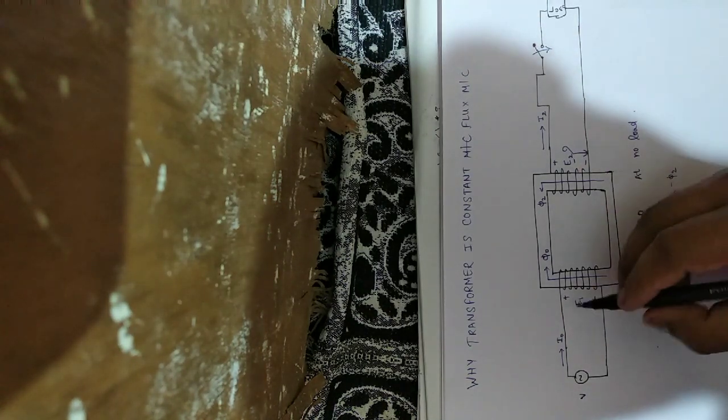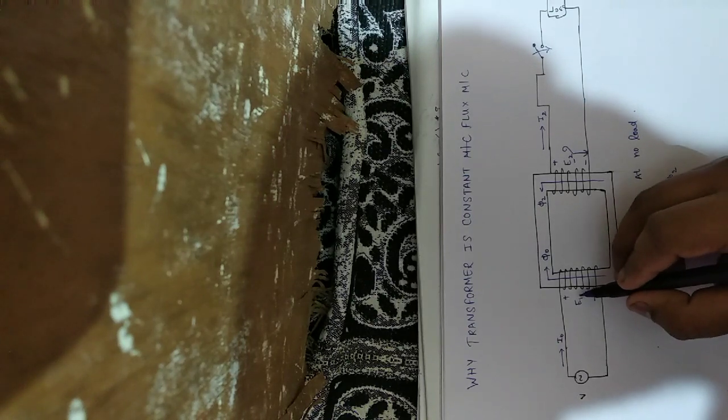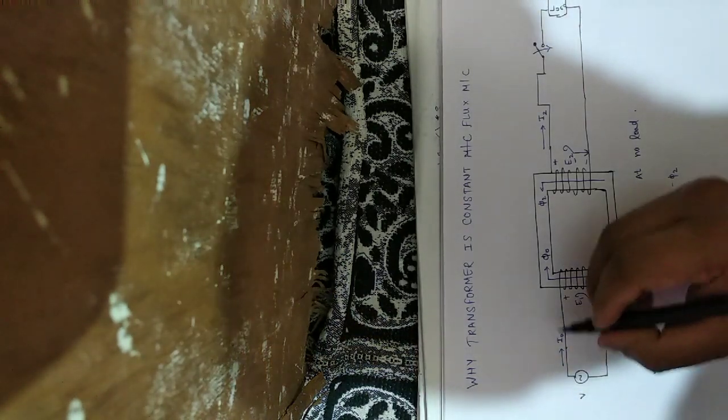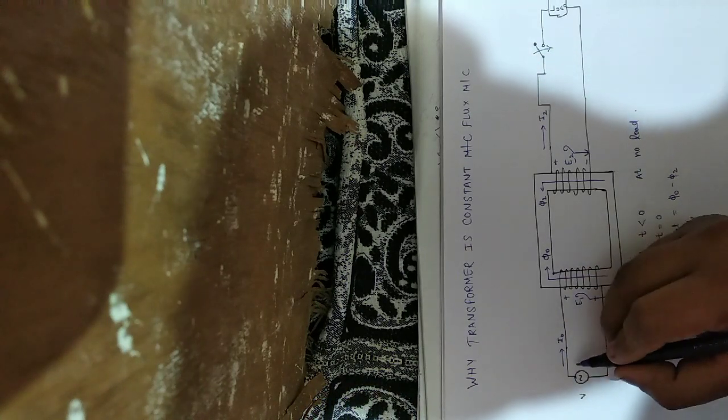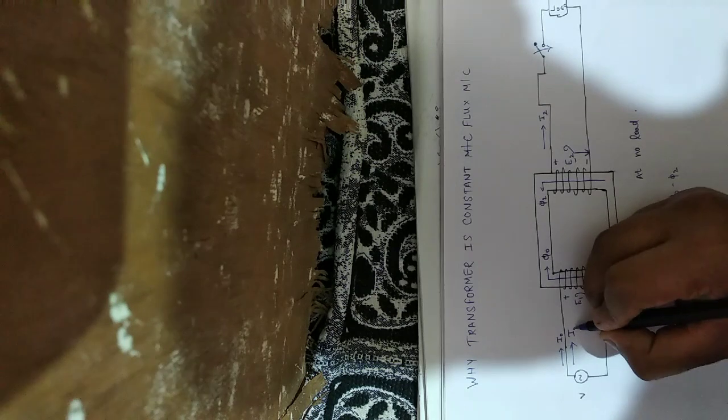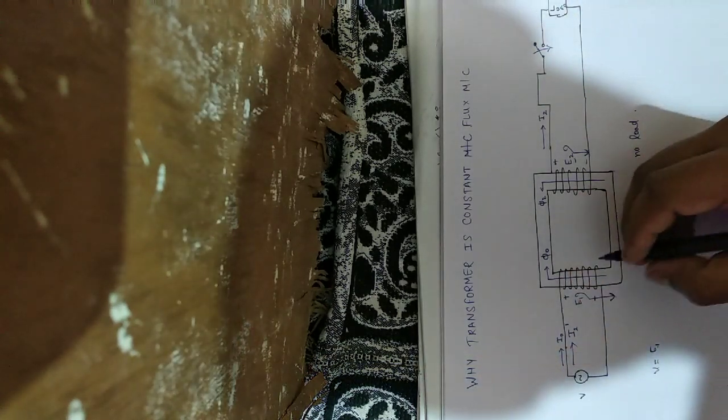This e1 also decreases, but e1 and v are equal, so the source will inject more current. This is e2 dash due to this e2 dash.